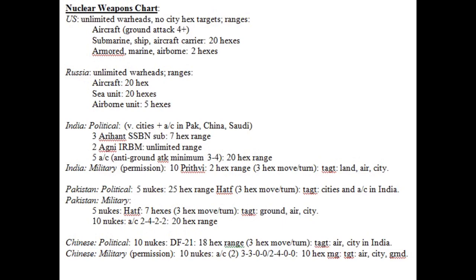The India political player — as opposed to the India military player — have different kinds of nuclear weapons. The Indian political player can fire missiles against cities and against aircraft at cities in Pakistan, China, and Saudi Arabia, though their nuclear weapons are not operationally easy to deploy, so they're really just counter-value weapons for blowing up cities. The Arahant submarine has a 7-hex range with three nuclear weapons. The Agni IRBM has unlimited range. India has five aircraft with anti-ground attack values of three to four and a 20-hex range. The Indian military, with the political leader's permission, has ten Prithvi rockets with a two-hex range that can move three hexes per turn.